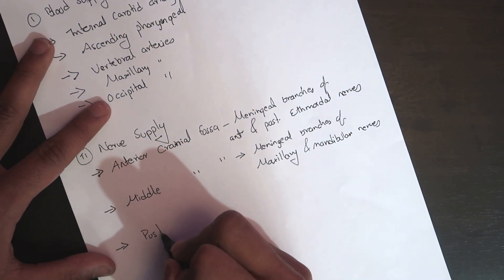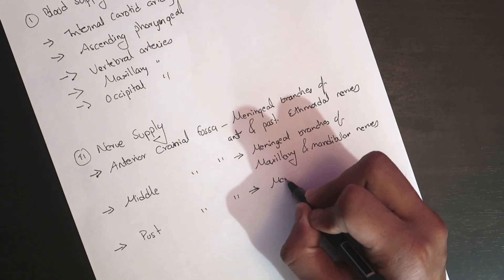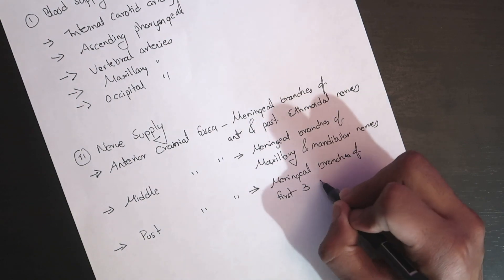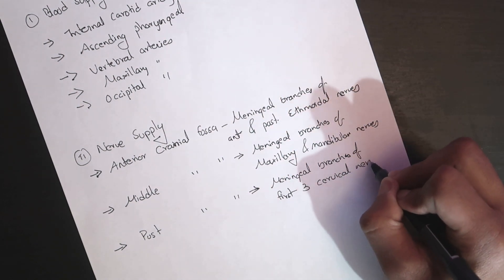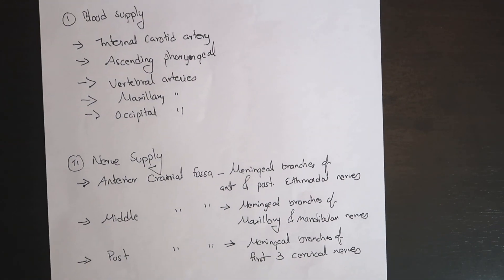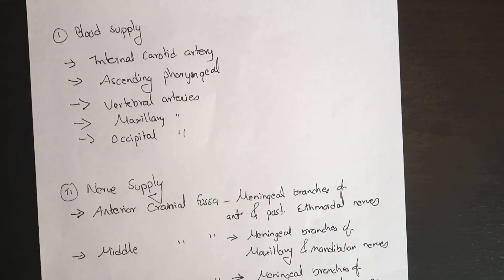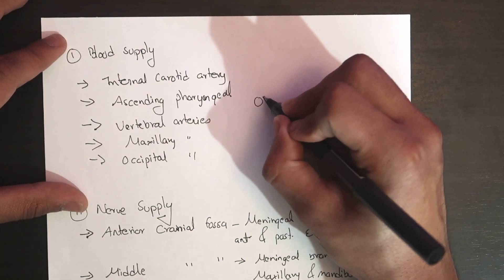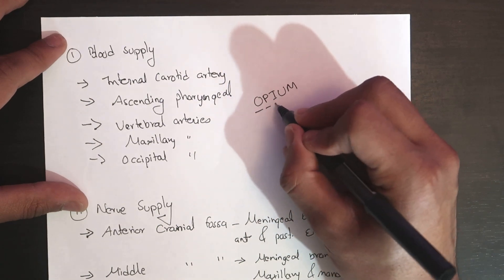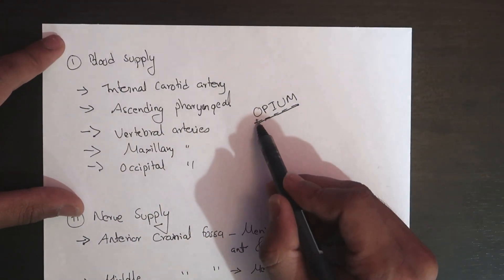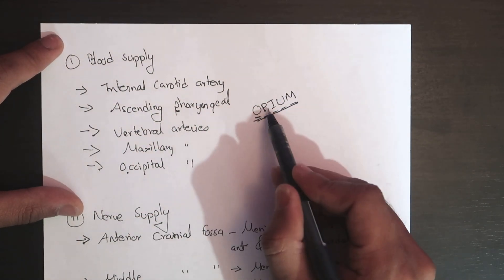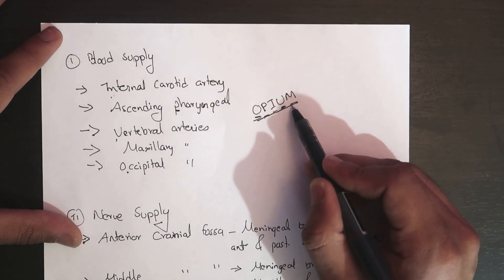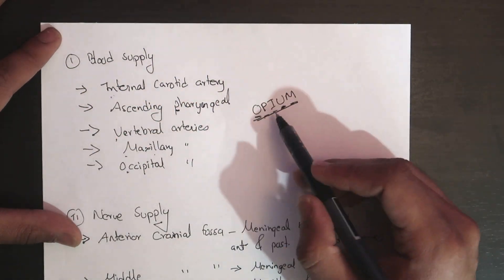The dura mater covering the posterior cranial fossa is supplied by the meningeal branches of the first three cervical nerves. So that is the blood supply and nerve supply of the dura mater. To remember the blood supply, the mnemonic is OPIUM: O for occipital arteries, P for ascending pharyngeal artery, I for internal carotid artery, U for vertebral arteries, and M for maxillary arteries.